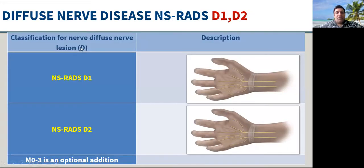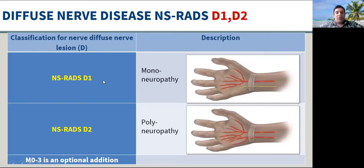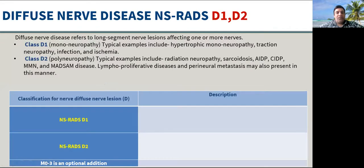Diffuse neuropathy diseases involve either mononeuropathy or polyneuropathy. Mononeuropathy could be due to hypertrophy, traction, ischemia, or infection, while polyneuropathy could have systemic causes, radiation neuropathy, sarcoidosis, acute and chronic inflammatory demyelinating polyneuropathy, multifocal motor neuropathy, or other diseases.